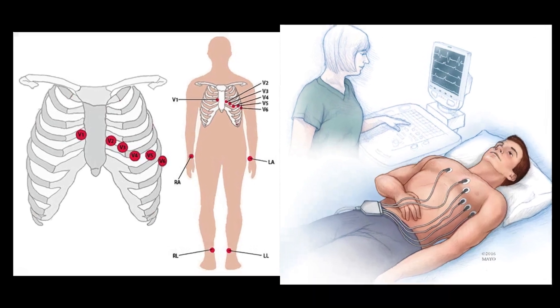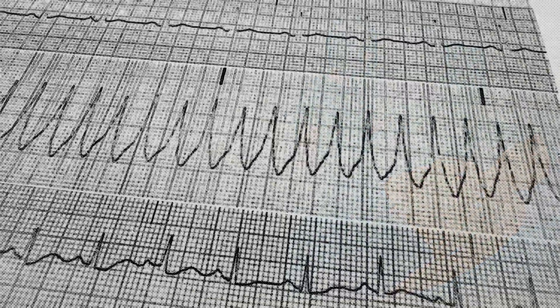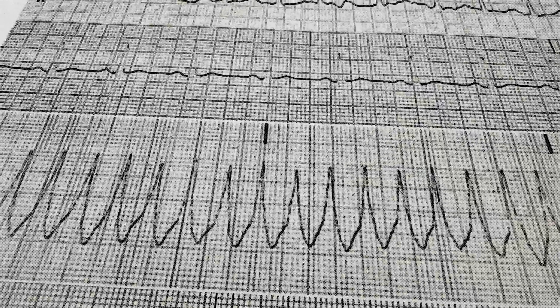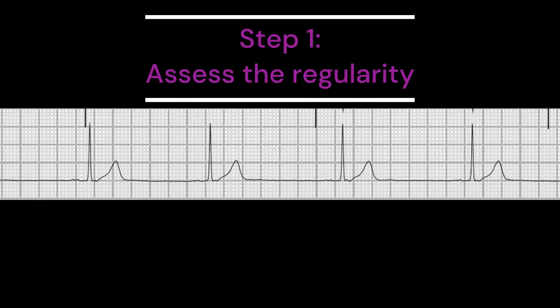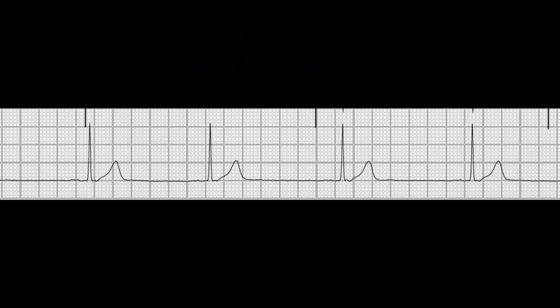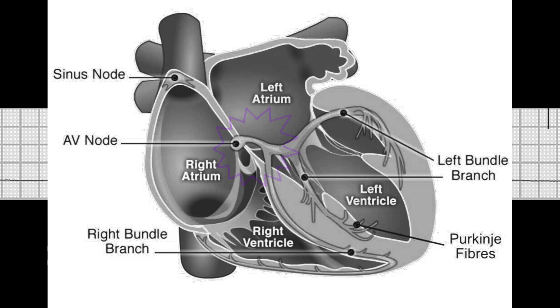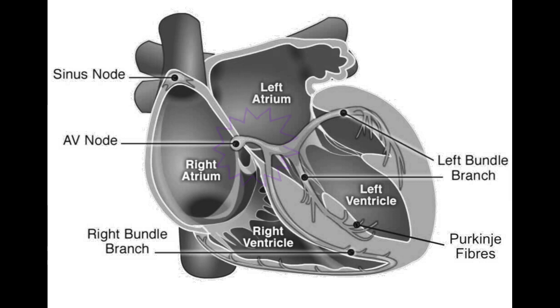Let us do a six-step analysis of an EKG strip of a junctional rhythm. First, let's examine the rhythm for its regularity. A junctional rhythm will typically present with a regular rhythm with a constant distance between each QRS complex. This is due to the AV junction acting as the primary pacemaker, which provides a consistent pacing to the heart.